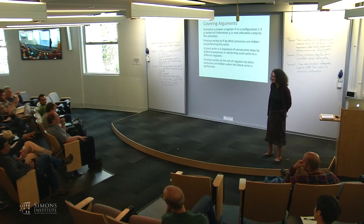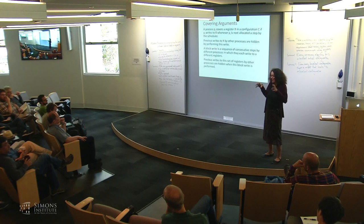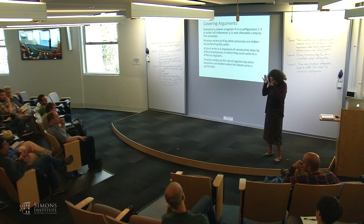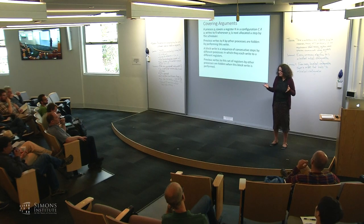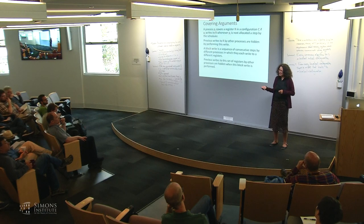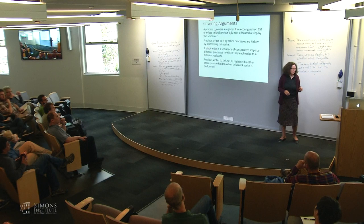If PI is covering a register R, it's still possible that the old value of R was read before PI got allocated. When the adversarial scheduler next schedules PI, it will overwrite whatever is there. When something important — really useful information — gets written, then the adversary can say, 'I'll get rid of that useful information.' That's really how the adversary can use covering.